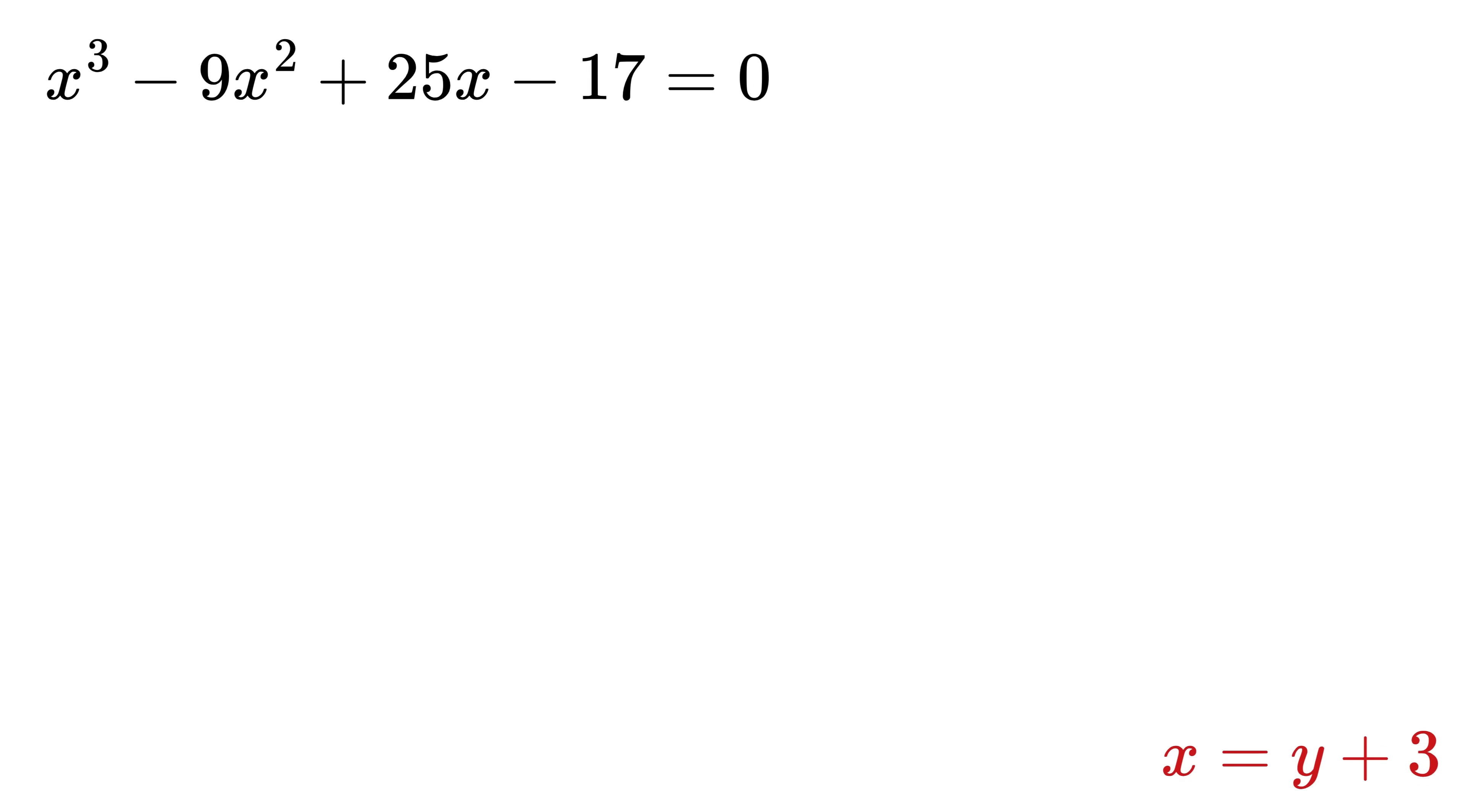Now what we will do is substitute the value of x here in terms of y in this equation. So we get (y + 3)³ - 9(y + 3)² + 25(y + 3) - 17 = 0.